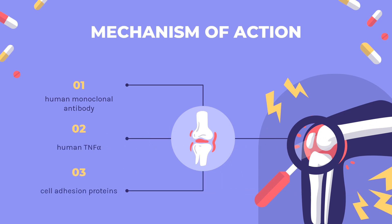Mechanism of Action: As a human monoclonal antibody, Golimumab binds and inhibits soluble and transmembrane human TNF-alpha. Inhibition of TNF-alpha prevents it from binding to its receptors, which prevents leukocyte infiltration through prevention of cell adhesion proteins such as E-selectin, ICAM, and VCAM-1, and pro-inflammatory cytokine secretion such as IL-6, IL-8, G-CSF, and GM-CSF in vitro.